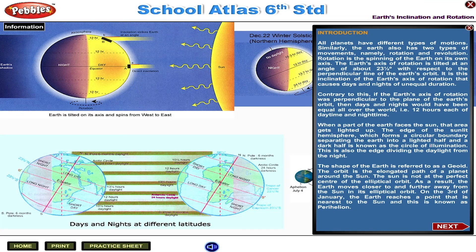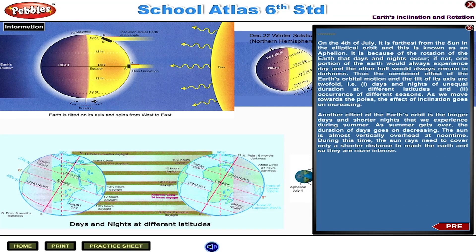On the 3rd of January, the Earth reaches a point that is nearest to the Sun and this is known as perihelion. On the 4th of July, it is the farthest from the Sun in the elliptical orbit and this is known as aphelion.